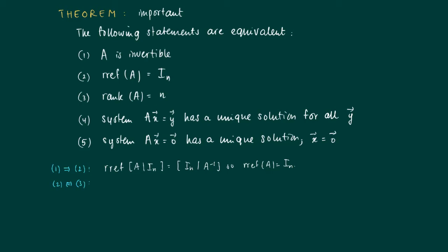Statements 2 and 3 are in fact directly equivalent. From 2 follows 3: A has n pivots, so the rank is n, since the rank is defined as the number of pivot elements after performing Gauss-Jordan elimination steps.